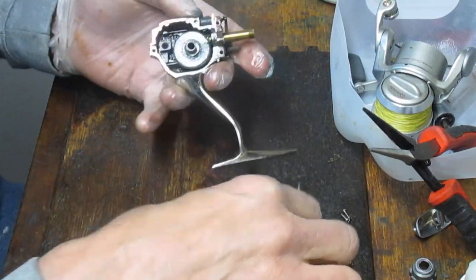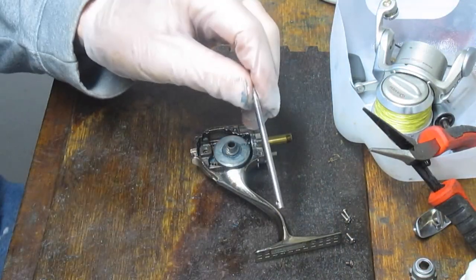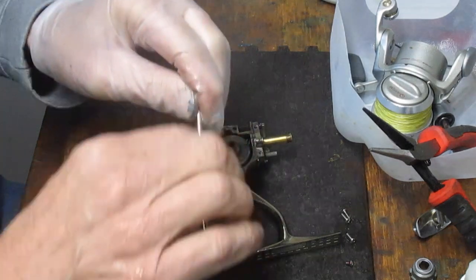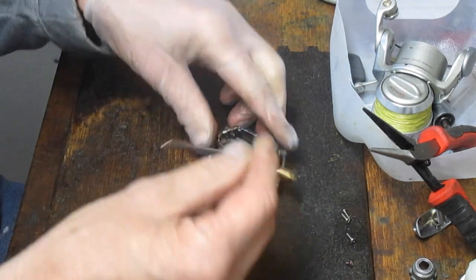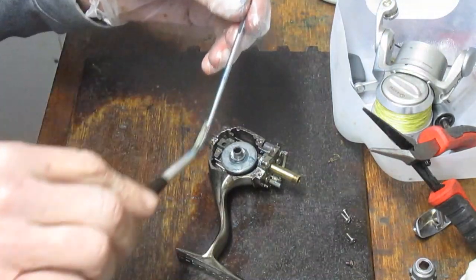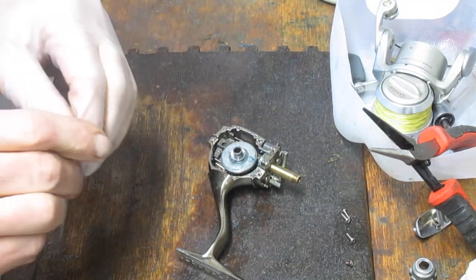I use a little 4-0 steel wool just to get anything that might be stuck off of there. And put a light coating. Don't go crazy on this shaft. A light coating of grease.